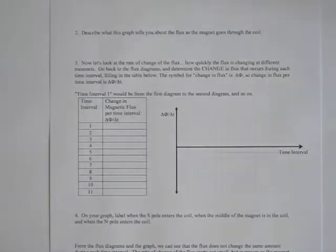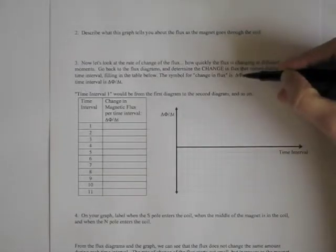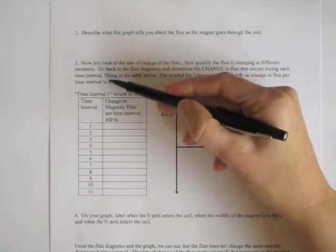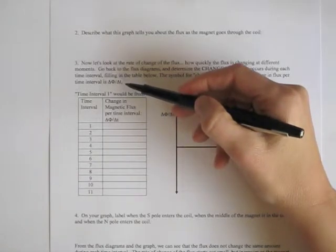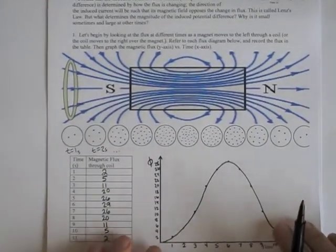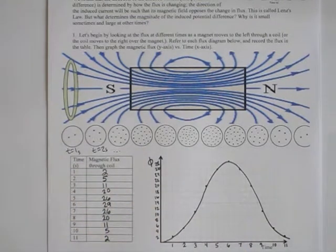Number three — now let's look at the rate of change of the flux, meaning how quickly the flux is changing at different moments. Go back to the flux diagrams and determine the change in flux that occurs during each time interval, filling in the table below. The symbol for change in flux is delta phi. So change in flux per time interval is delta phi over delta t — that quantity is also called the rate of change of the flux. Instead of recording the actual flux, we want to find the change in flux.